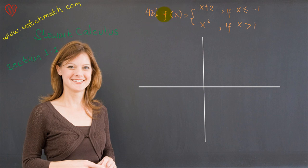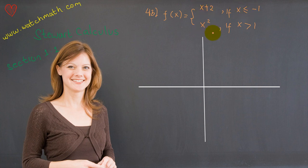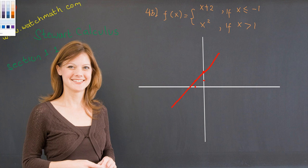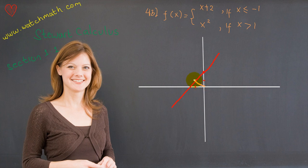Now let us look at problem 43. We have f(x) defined as a piecewise function: x plus 2 if x is less than or equal to negative 1, and x squared if x is greater than negative 1. We have seen the trick. First, sketch the graph of x plus 2 ignoring the restriction. To draw it we need two points: (0, 2) is on that line, and if we plug in x equals negative 1 we get the point (−1, 1). Sketch the straight line through those two points. Also, x squared is a parabola passing through (1, 1).